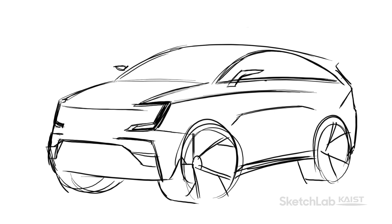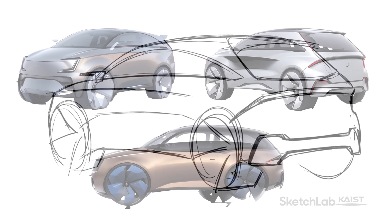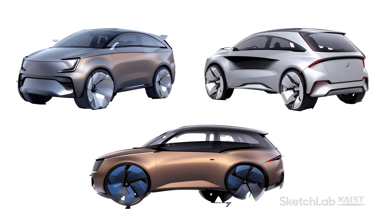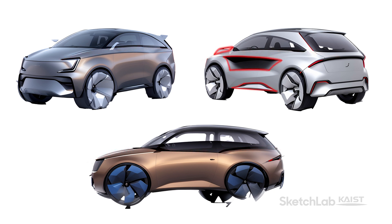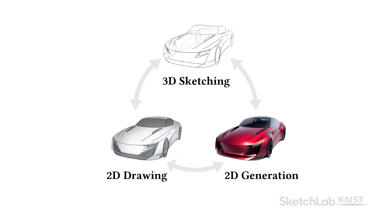Designers must create a new sketch for each viewpoint and generated images often lack view consistency. As a result, the set of images may not describe the same 3D shape and design intent may be lost in translation. To overcome these limitations, we integrate the strengths of 3D sketching and 2D generative AI in a complementary manner.